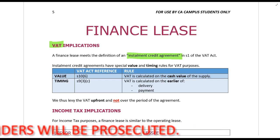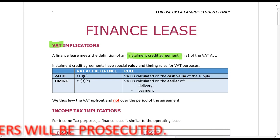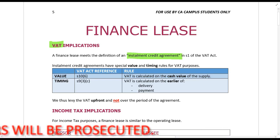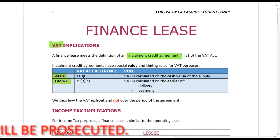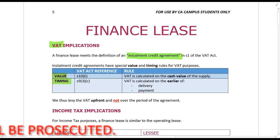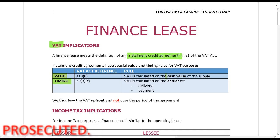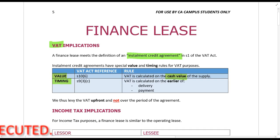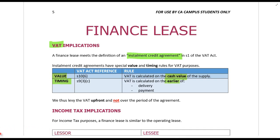An installment credit agreement has a special value and timing rule. The value rule says it's calculated on the cash value of the supply, and the timing rule says it's calculated on the earlier of delivery or payment.